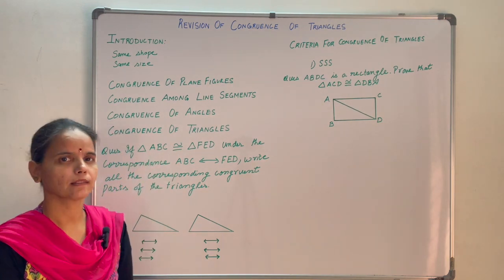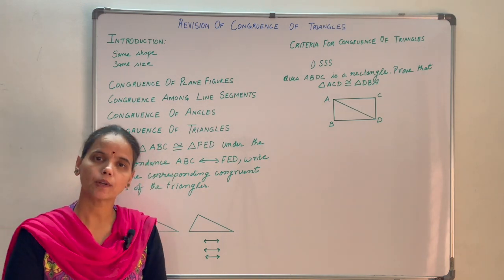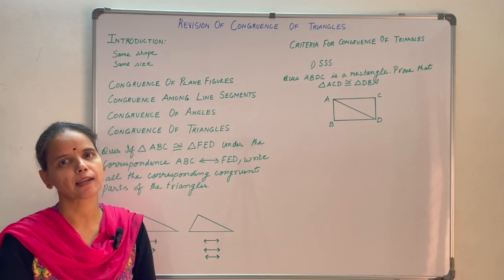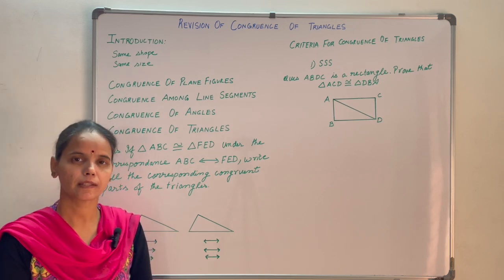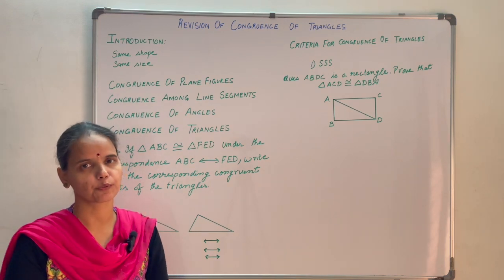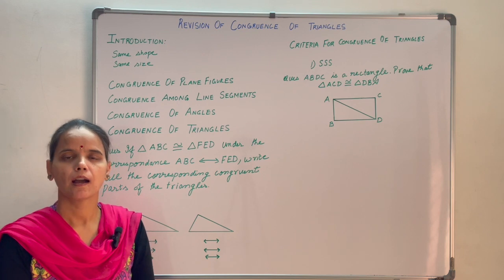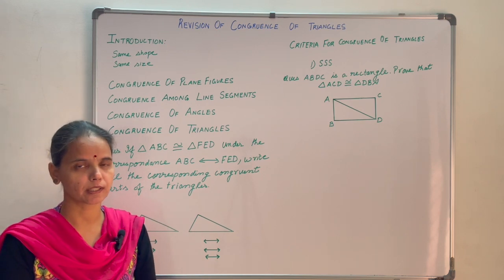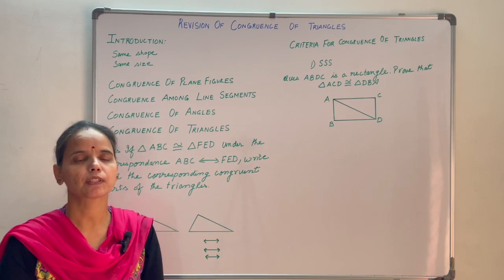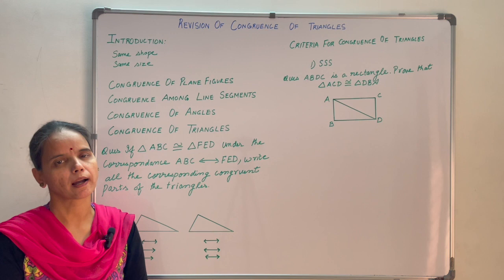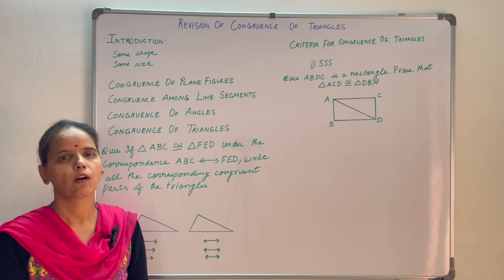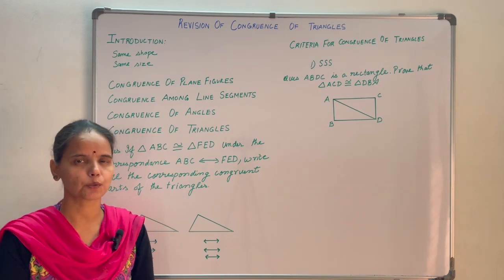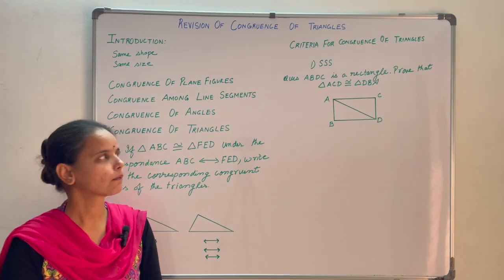Congruence of angles. Two angles are said to be congruent if they have the same measure. If angle A equals 50 degrees and angle B equals 50 degrees, then we say angle A is congruent to angle B, or you can say angle A is equal to angle B.